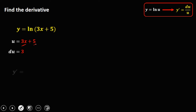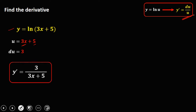To get the derivative of this given using the formula, y prime is equal to du over u — so du is 3, over u, that's 3x + 5. So this is the derivative.